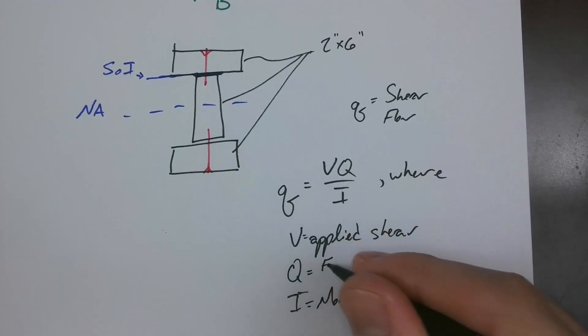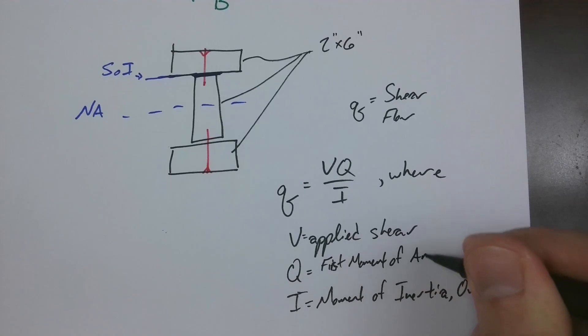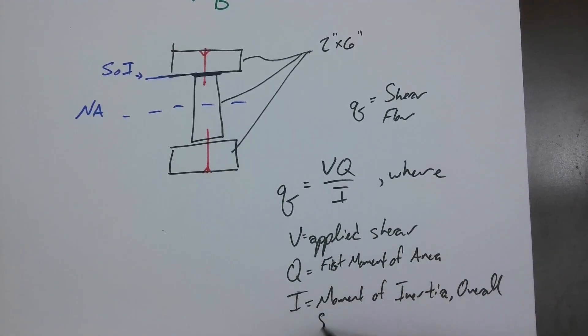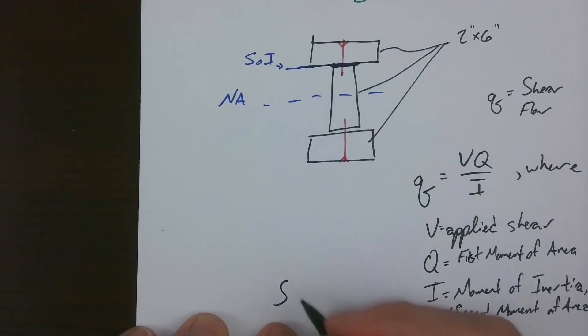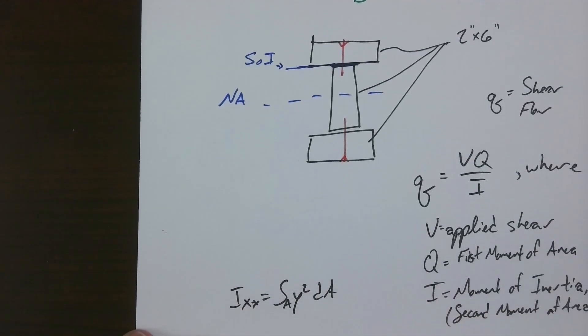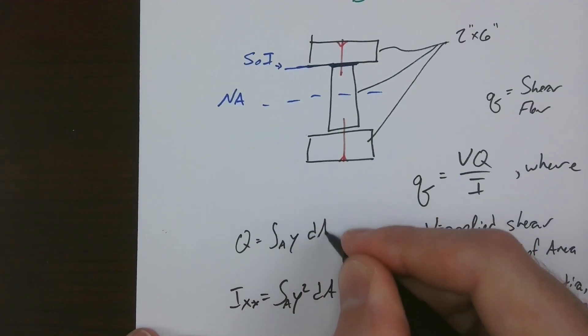Q is a little bit confusing. This is called the first moment of area. And this is actually known as the second moment of area. Those relate to their rigorous definitions. You might remember that Ixx is equal to the integral over the area of y squared dA to get you your moment of inertia. However, Q is actually equal to, you guessed it, just y over the area.